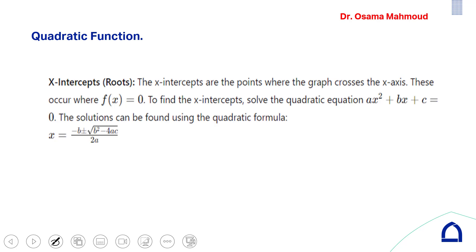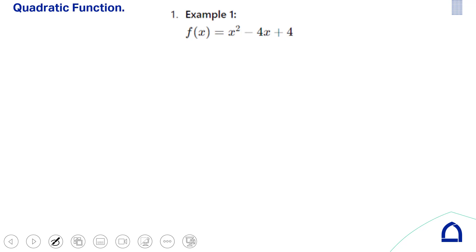The quadratic formula finds the roots when the quadratic function equals 0: AX² + BX + C = 0. You can find the x-intercepts from this formula or use your calculator. For this example, A is 1, B is minus 4, and C is 4. So C is the y-intercept.